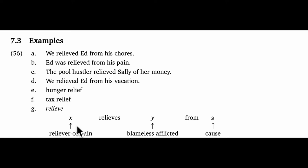And the frame says, the agent X is the reliever of pain, the patient Y is the blameless afflicted, and finally there's a cause Z. So in our A example, we get to be the heroic relievers of pain, Ed is the blameless afflicted, and the chores are the cause of Ed's affliction. So that's easy enough.